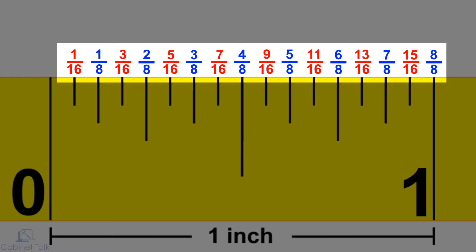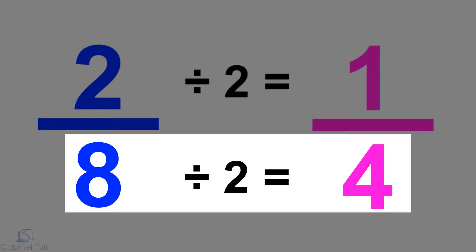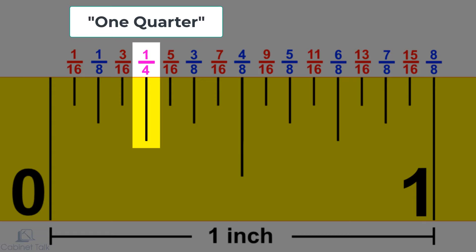Some of these fractions can be simplified even more. Let's start with two eighths. Two divided by two equals one, and eight divided by two equals four. So two eighths is really one fourth of an inch, but most people just say it's one quarter of an inch.